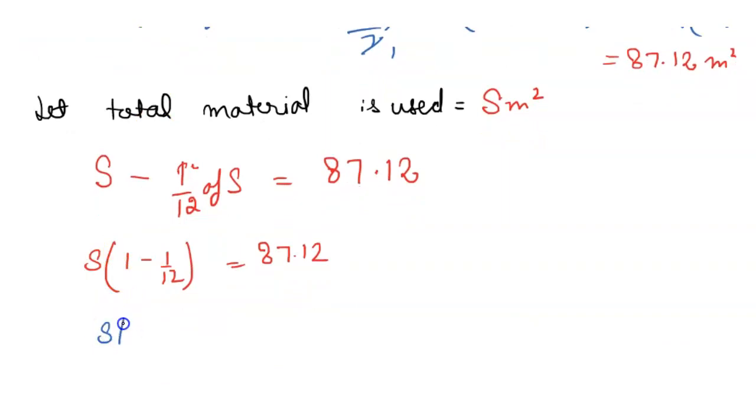Now in the next, here S, 12 minus 1, 11 upon 12 equals 87.12. So the value of S is equal to 87.12 times 12 upon 11. Here 11 ones are 11, 11 sevens are 77. Here is 10, 11.